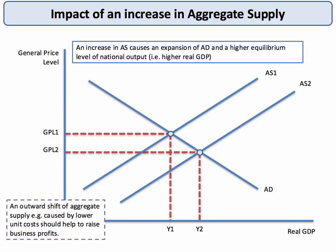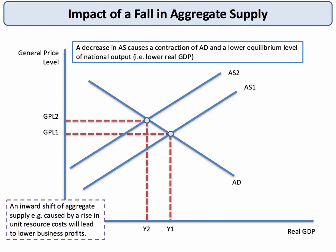If aggregate supply increases — an outward shift — we move down the demand curve, causing an expansion of aggregate demand. That leads to a higher equilibrium output but a lower price level. Conversely, if aggregate supply shifts to the left — an inward shift — that causes a contraction along the aggregate demand curve, a lower equilibrium level of national output, but also an increase in the price level. This diagram illustrates cost-push inflation, where a shift in supply causes higher costs and drives prices up.